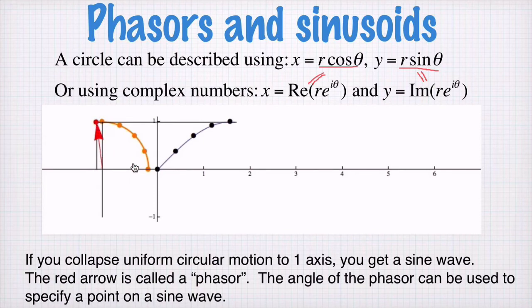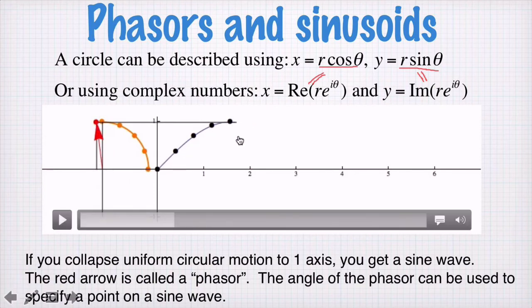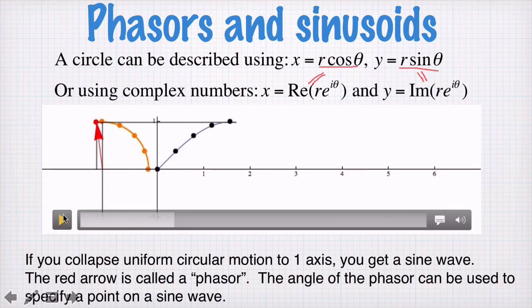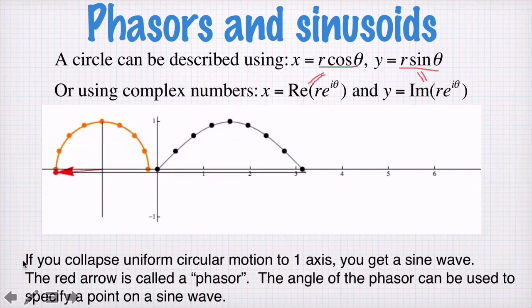And the vertical part here will plot out a sine function, because y is equal to r sin theta. So this axis along here is in radians, and as I animate it forward, I get a sine function.